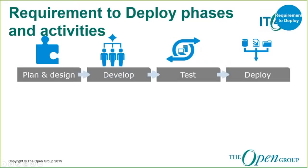There are four phases in the requirement to deploy value stream: plan and design, develop, test, and deploy. Keep in mind that this is a continuous development activity, not a one-time activity, or even necessarily sequential, and the phases are intertwined. For example, an agile methodology project may have all four phases happening every week.